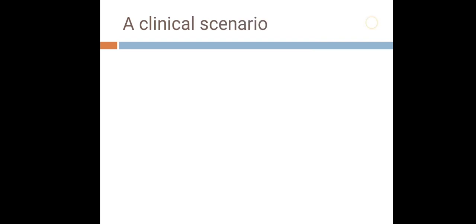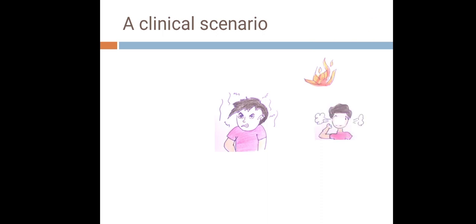Before starting the class material, let us discuss a clinical scenario. A 15-year-old male has been brought to the OPD with chief complaints of deliberate fire setting at home, frequent aggressive behavior like fighting with friends and neighbors, and frequent beating of animals without any apparent reason.